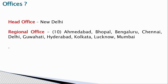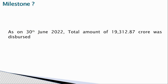The head office is in Delhi, and NHB has 10 regional offices. They may try to confuse you in the exam with a question like 'National Housing Bank has a regional office at Jaipur' — the answer is no. The 10 regional offices are at Ahmedabad, Bhopal, Bangalore, Chennai, Delhi, Guwahati, Hyderabad, Kolkata, Lucknow, and Mumbai.